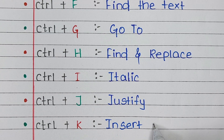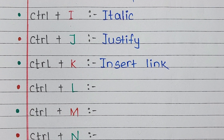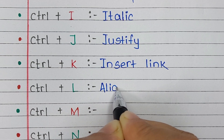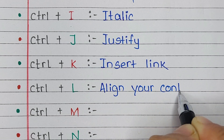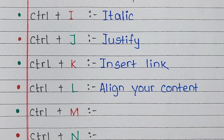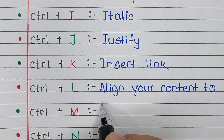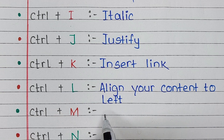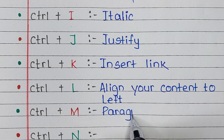Control I is the shortcut for Insert Link. Next one is Ctrl L. Ctrl L is the shortcut for align your content to the left. Next one is Ctrl M. Ctrl M is the shortcut for paragraph indent.